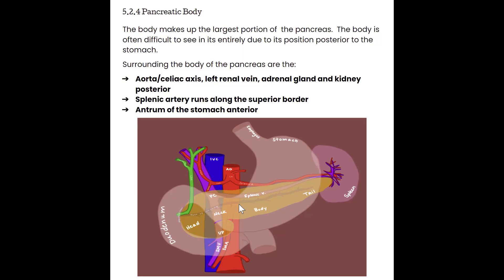The landmarks used to identify the body of the pancreas include the aorta, celiac axis, left renal vein, adrenal gland, and kidney — all sitting posterior to the body. We have the aorta, the superior mesenteric artery coming off here marking the start of the body, then as we follow the body over, we find the left renal vein running underneath it, the adrenal gland, and the kidney sitting a little bit more medially. The body of the pancreas sits mostly from the aorta over to about the kidney.